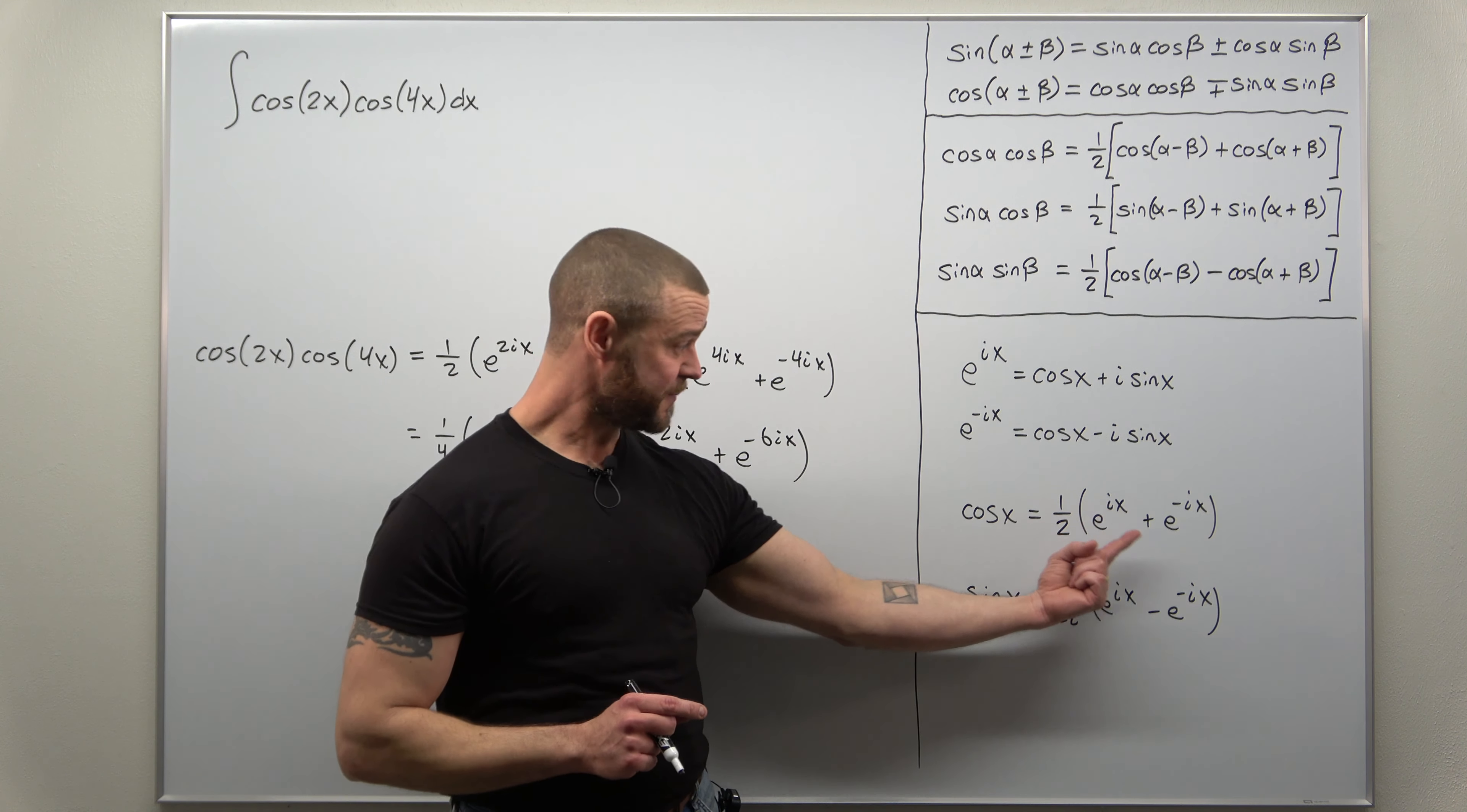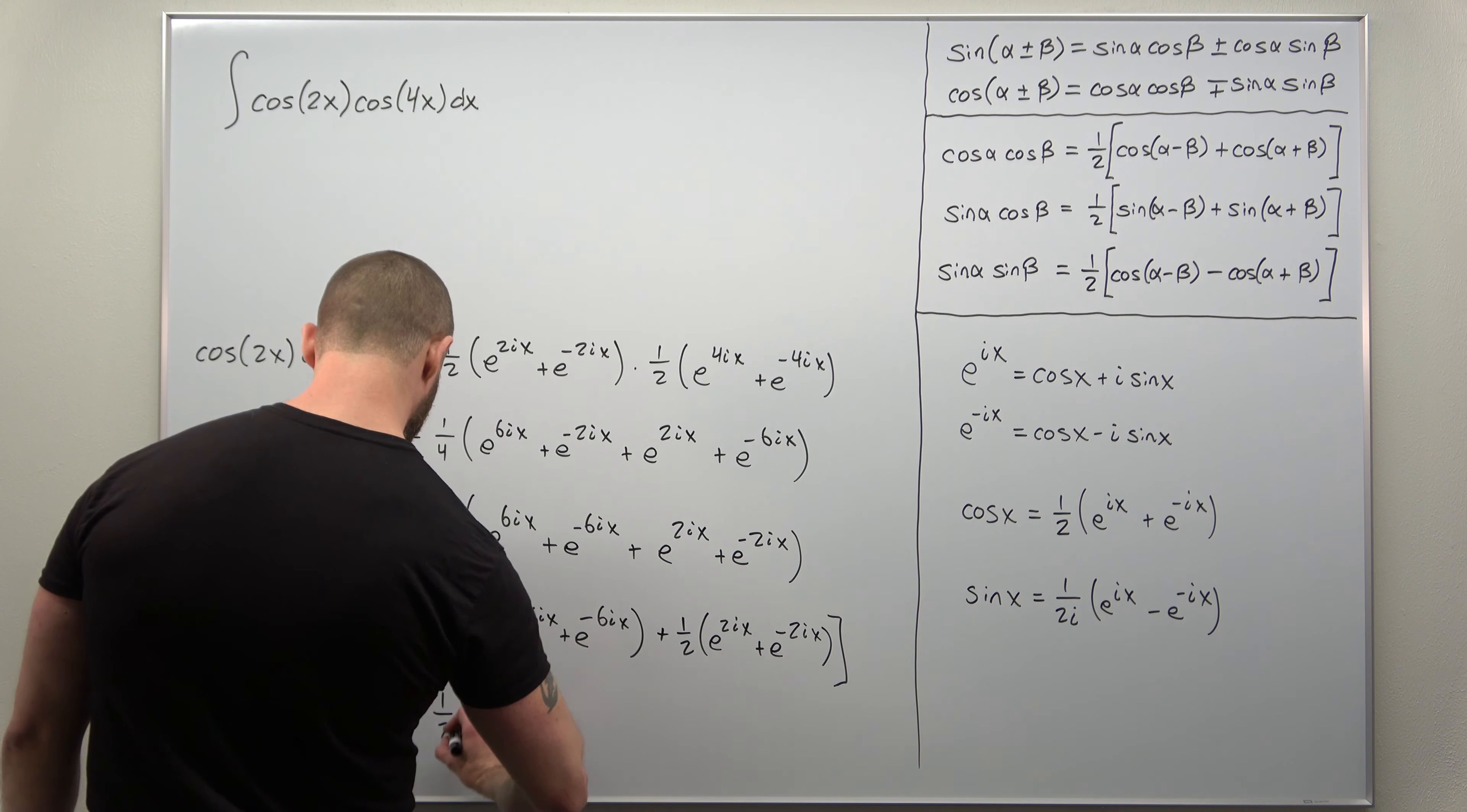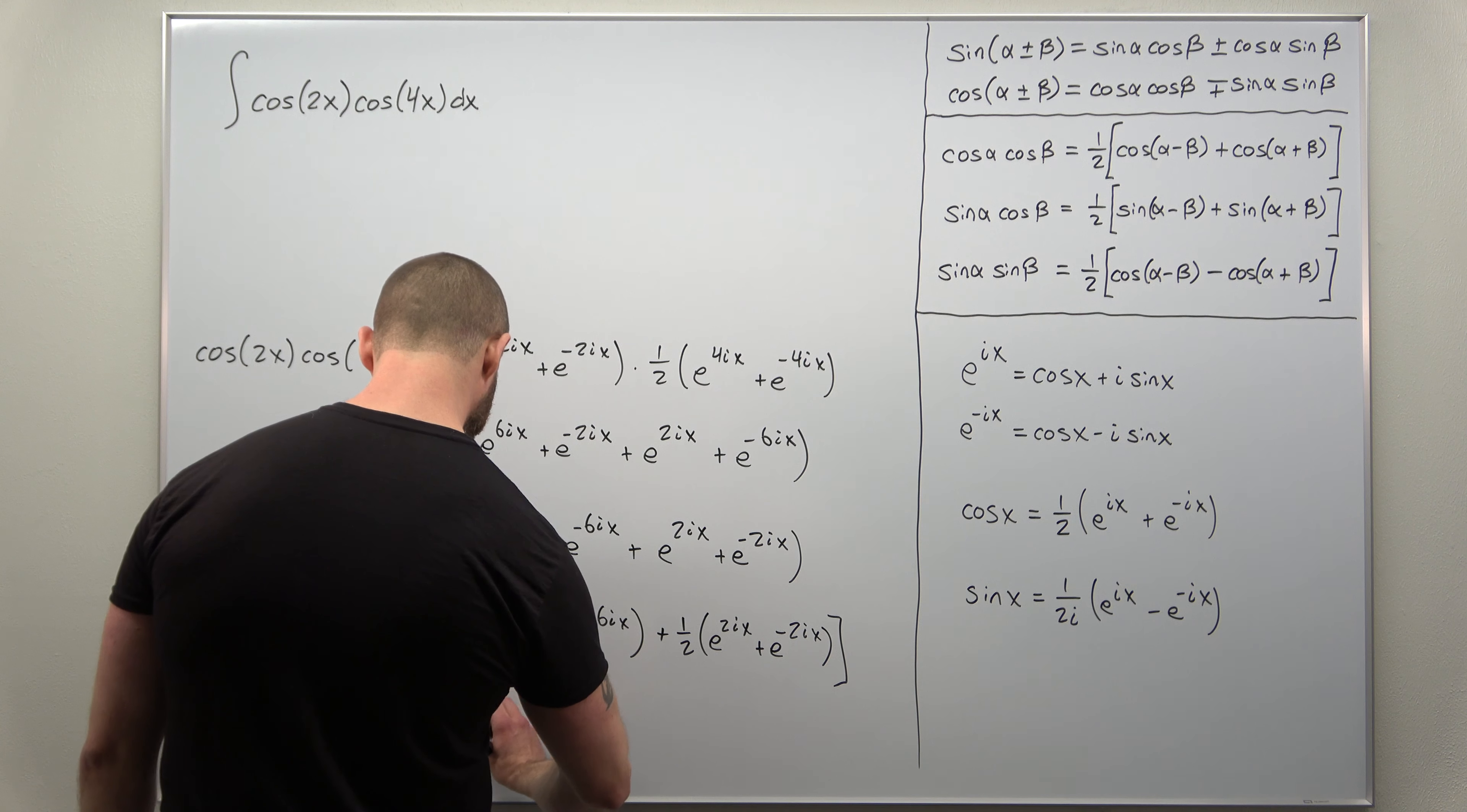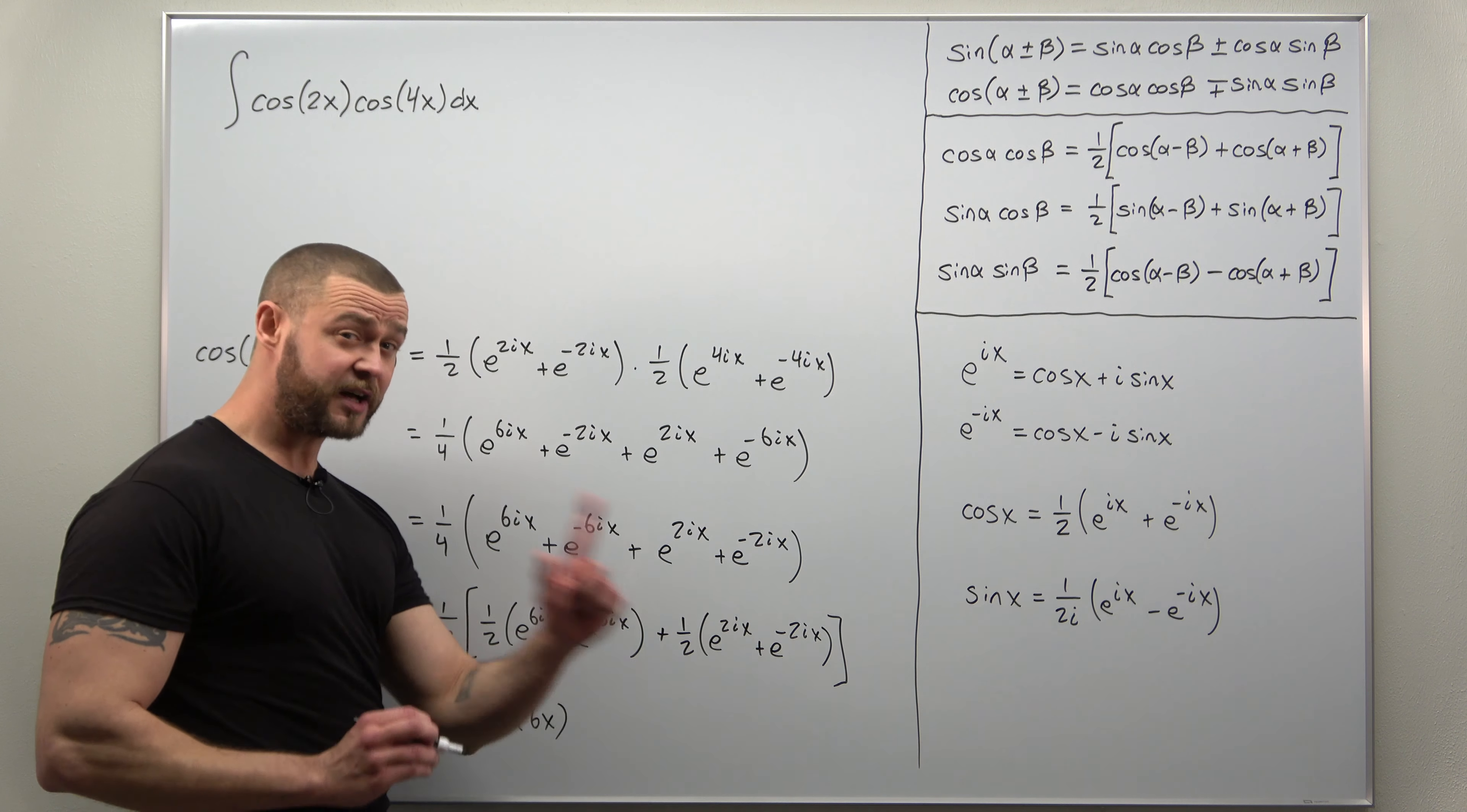Now both those terms fit exactly our cosine identity. Looks like we can rewrite this as one-half. This part's going to come out to cosine of 6x, and this part, that's going to come out to cosine of 2x.